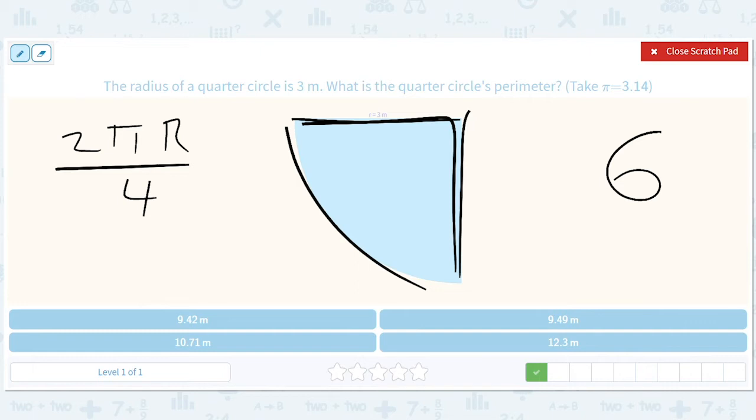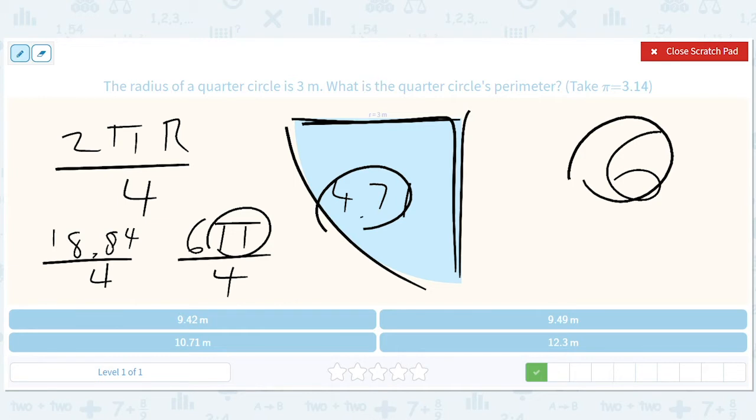Okay, so what is 2 pi r? Well, it's 6 pi divided by 4. Okay, so what's 6 times 3.14? It is 18.84. So this length here is 4.71. That's the main takeaway. So 6 plus 4.71 is 10.71.